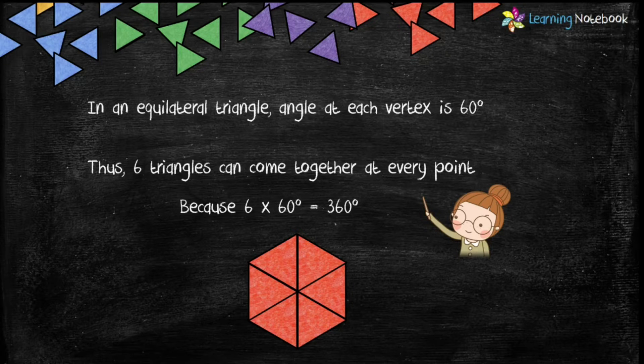For example, six equilateral triangles join together at a point to form a hexagon.